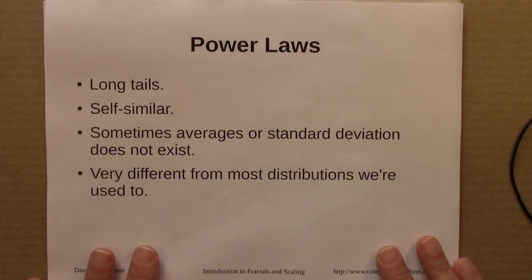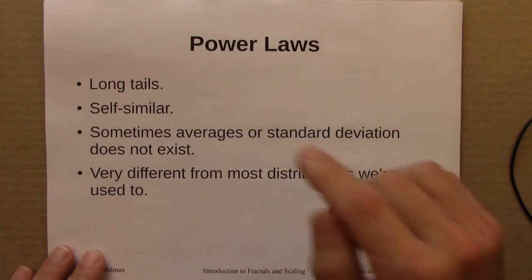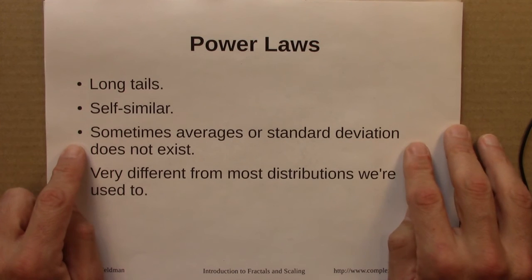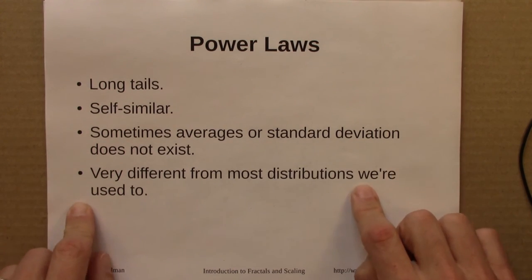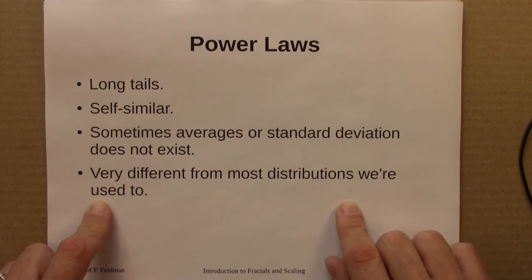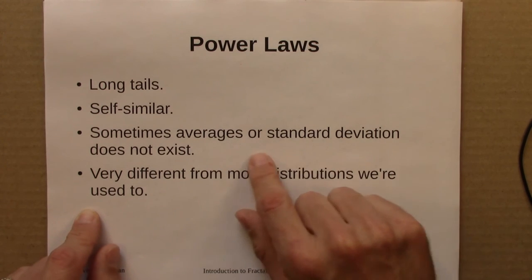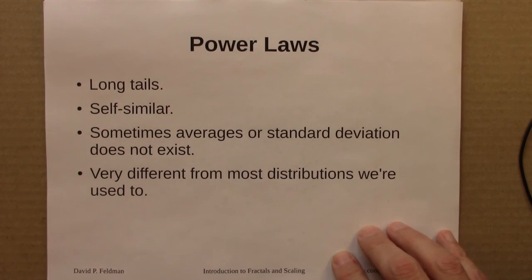So, grand summary for power laws so far, they have long tails, they're self-similar, and sometimes averages or standard deviations don't exist. I think the takeaway from this is that this is different from most distributions we're used to, normal distributions and exponential distributions. Diverging averages and standard deviations mean we need to handle these with caution, and they have some rather unusual and I think interesting and fun mathematical properties.